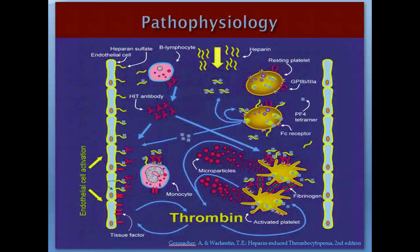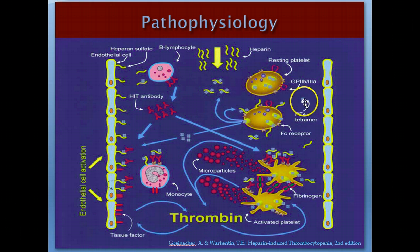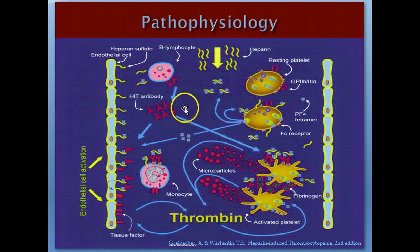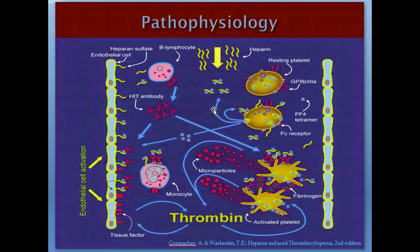Moving into the pathophysiology: we have a resting platelet with PF4 within the alpha granules and FC receptors on the platelet surface. Once heparin is infused, extra PF4 is released and attaches forming the PF4-heparin complex. This complex is immunogenic and will lead B lymphocytes to produce antibody against it. The complex attaches to the platelet surface in an equimolar or two-to-one ratio for optimal binding, leading to maximal platelet activation when attacked by antibodies.